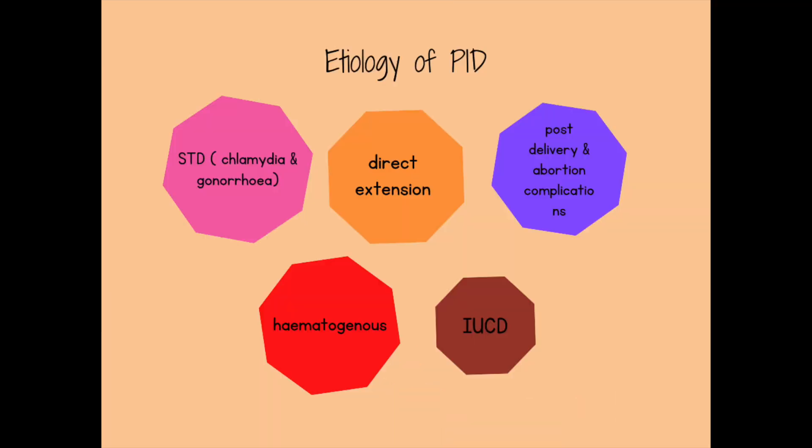The commonest cause is sexually transmitted diseases such as gonorrhea and chlamydia. Less common causes include direct extension from appendicular, diverticular, or post-surgical abscesses that rupture into the pelvis. Post-delivery or post-abortion complications may also be a cause. Hematogenous spread is rare but can occur in tuberculosis. Another important cause is the presence of an IUCD — an intrauterine contraceptive device — which increases the risk of PID.